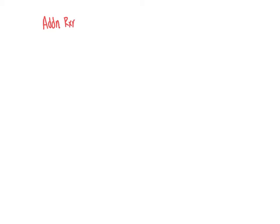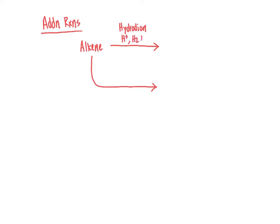When we think about addition reactions in general, a couple of different types of alkene addition reactions that involved carbocations were hydration — adding water across the carbon-carbon double bond using an acid catalyst and water — and the addition of halo acids across carbon-carbon double bonds by adding HX. For our conjugated dienes, we are going to focus on those two types of addition reactions as well: hydration and the addition of halo acids.